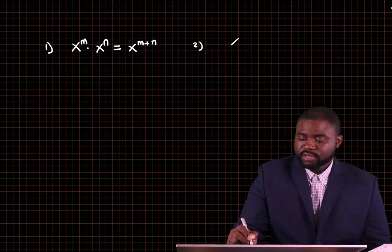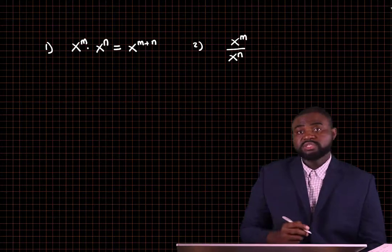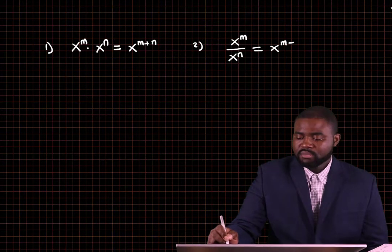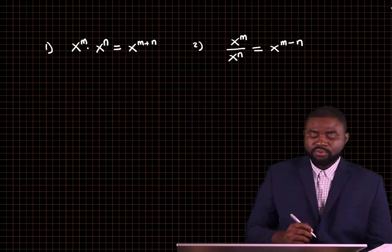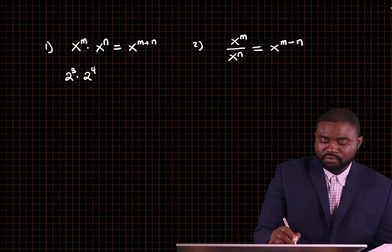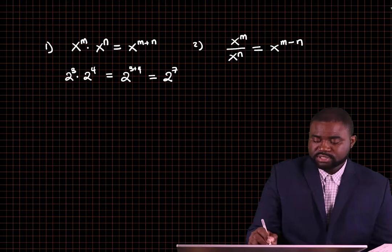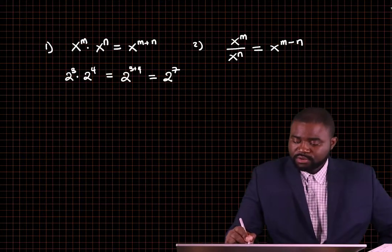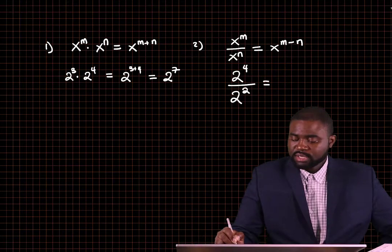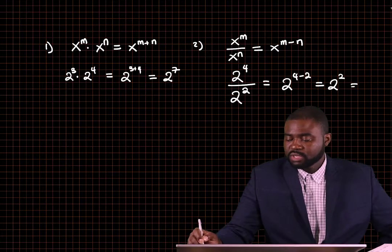We also saw that if we divide x raised to the power m by x raised to the power n, this is just going to be equal to x raised to the power m minus n. For example, 2 raised to the power 3 multiplied by 2 raised to the power 4 is just going to be 2 raised to the power 3 plus 4, which is equal to 2 raised to the power 7. Similarly, 2 raised to the power 4 divided by 2 raised to the power 2 is the same as 2 raised to the power 4 minus 2, which is just 2 raised to the power 2, and that will give us 4.